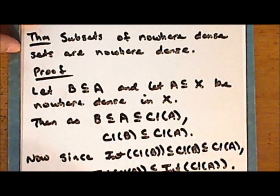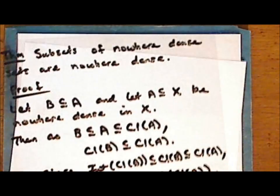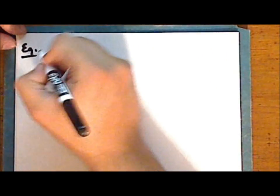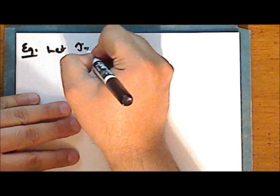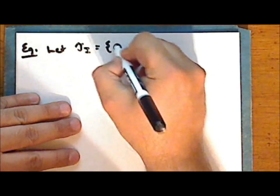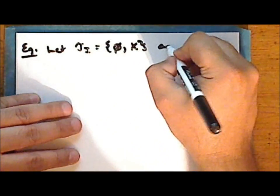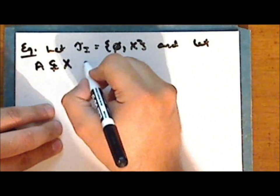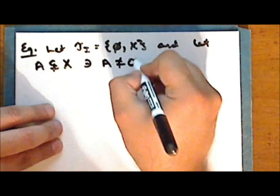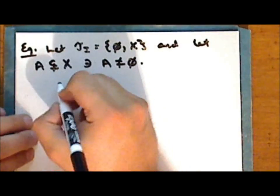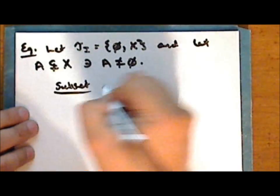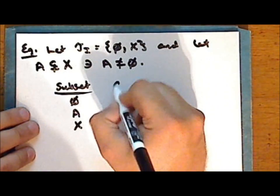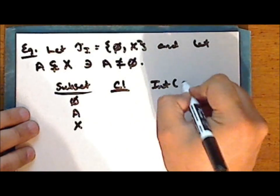Okay, so next we will look at some examples. Let tau sub i be the indiscrete topology on the set X, and let the set A be a non-empty proper subset of the set X. We will look at the empty set, the non-empty proper subset A, and the entire set, and examine their closure and the interior of their closure.